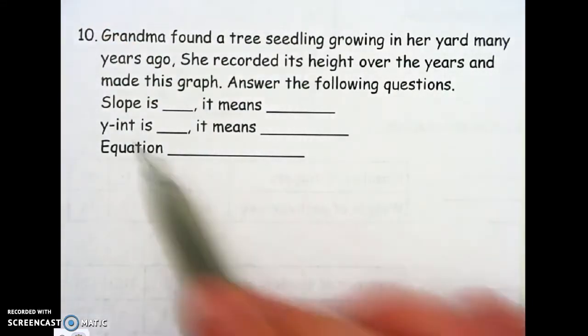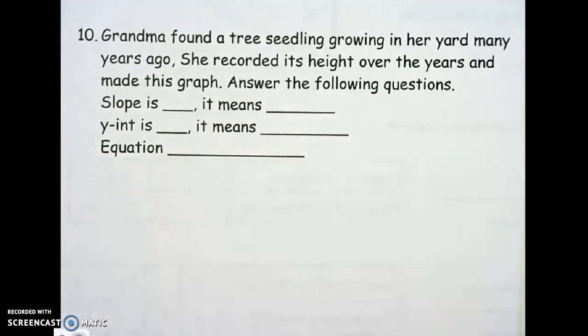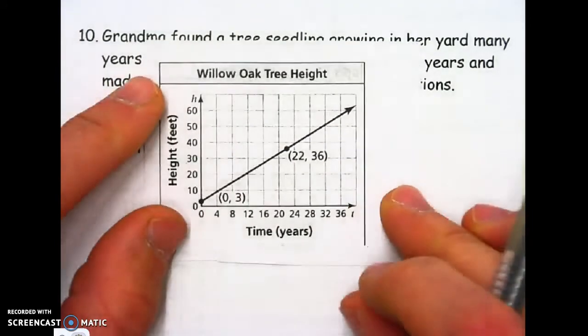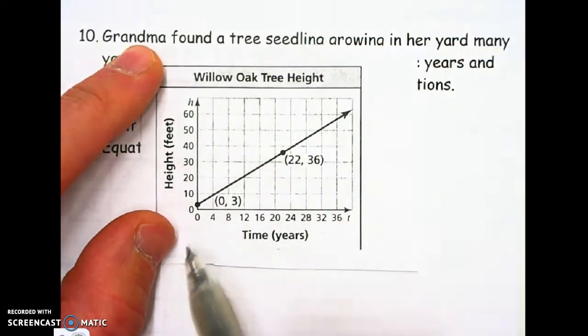Answer the following questions. Let's find the slope and its meaning, the y-intercept and its meaning, and then write the equation. So when you've got a graph, do the y-intercept first. Just go to the y-axis right there and see where it hits.